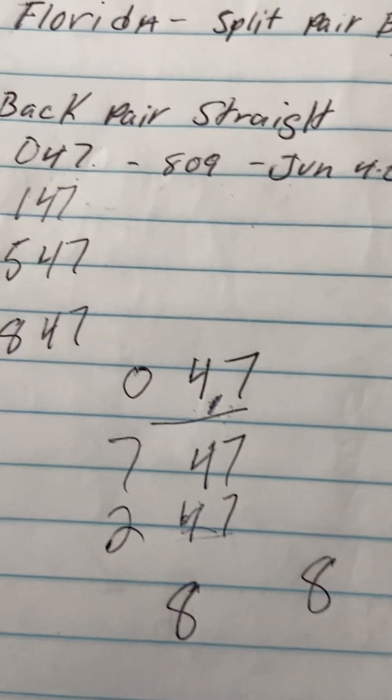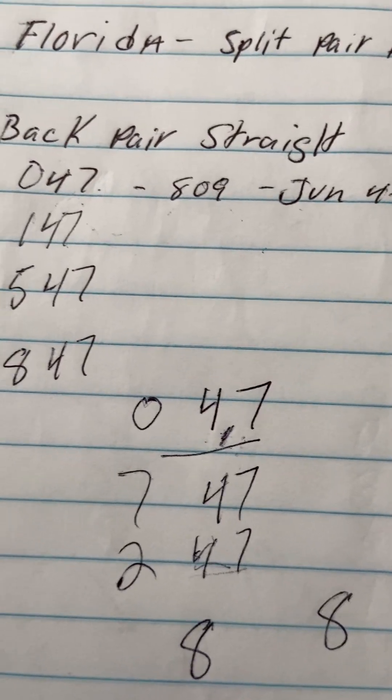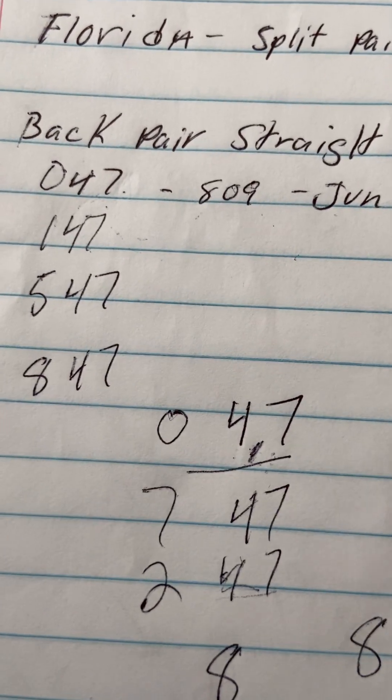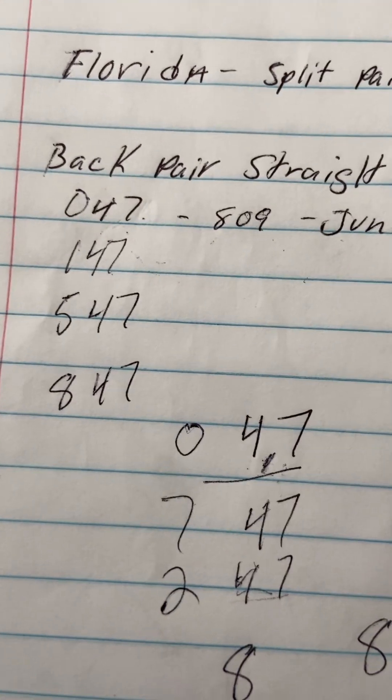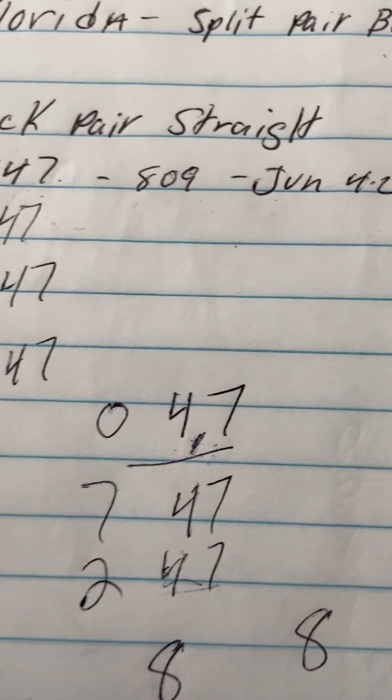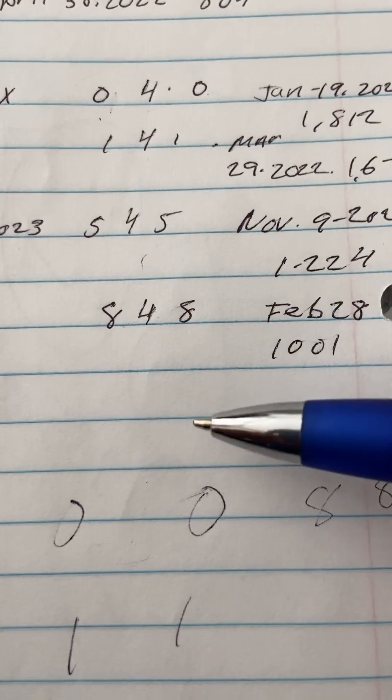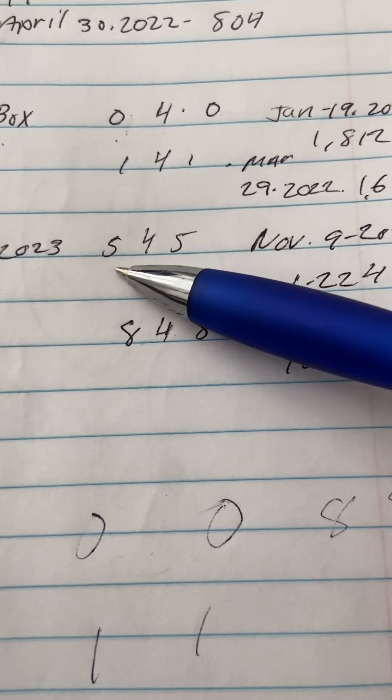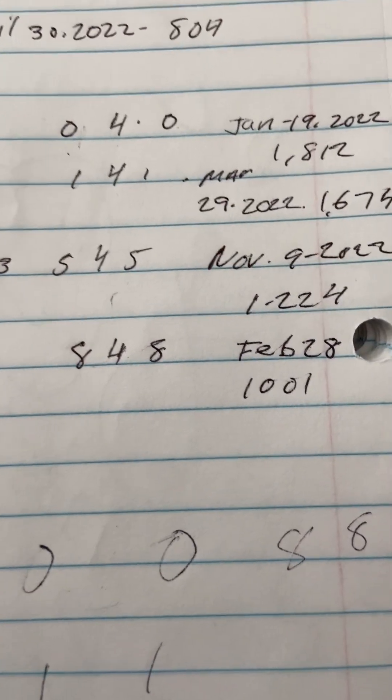Again, this is for Florida. Hopefully you can study these numbers, and hopefully you are a winner. I know it's a lot of numbers, but if I'm going to leave you with anything, that's why I don't like to do too much. We can just stick to the task at hand, we can just stick with the 0-4-0, or the 1-4-1, or the 5-4-5, or the 8-4-8. I like 0-4-0, why not?